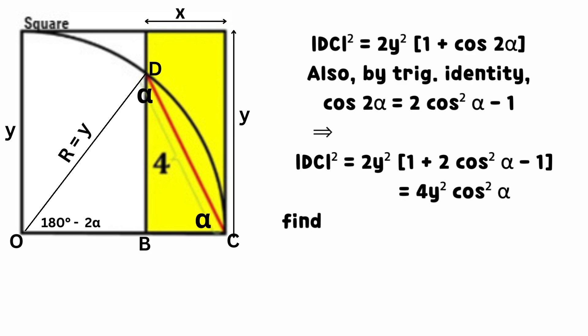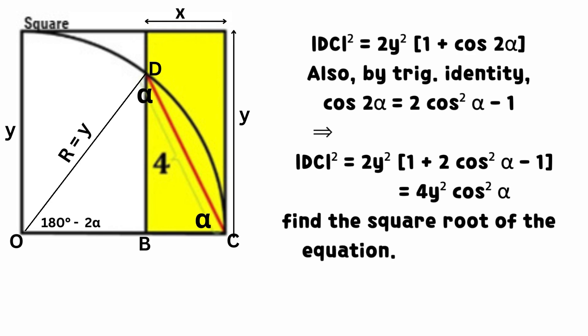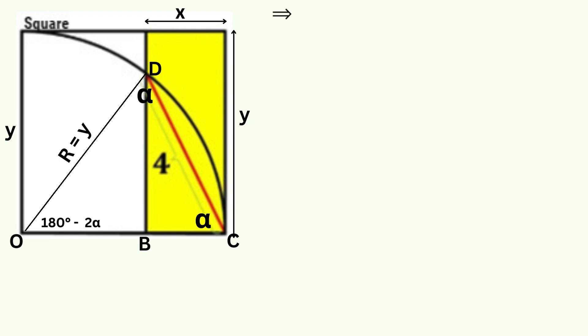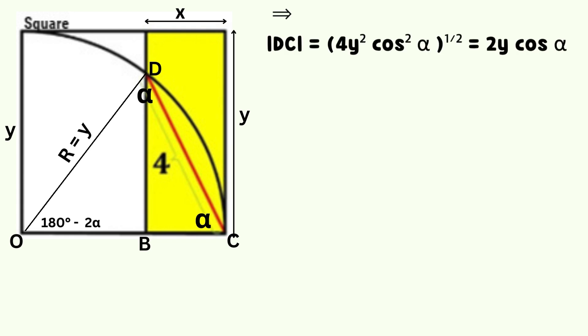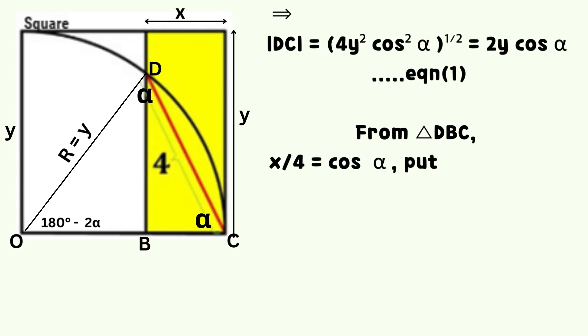Substituting into the square of line DC, we obtain that DC squared equals 4Y squared times 4 cosine squared alpha. Taking the square root gives the length of line DC equals 2Y cosine alpha after simplification — we call this equation 1. From triangle DBC, X divided by 4 equals cosine alpha; substituting into equation 1.